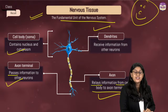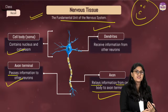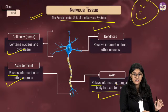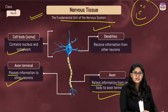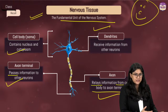Pili are structures present in bacteria that play an important role in sexual reproduction in bacteria. Cilia are present for movement.